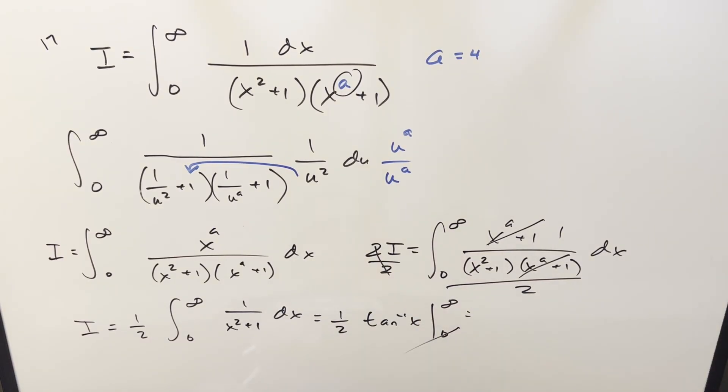Integrate that, we're just going to have 1/2 arctan(x) evaluated from zero to infinity. Arctan at zero is just zero. Arctan at infinity is going to be π/2. So we're going to end up with 1/2 times π/2. And for my final solution on it, we just get π/4. And that's it.